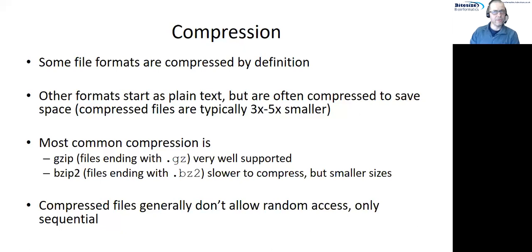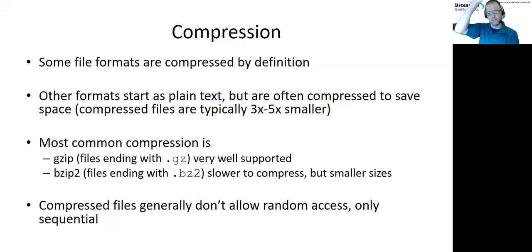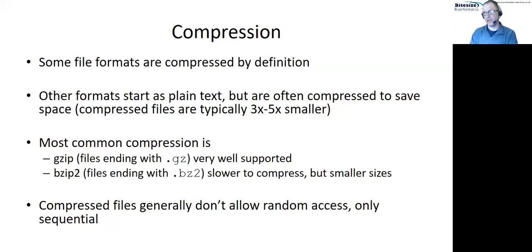There's a trade-off when compressing: your data gets smaller, but general compression schemes don't allow random access into the file. If you compress your data it's much harder to read from a random internal position — you're back to reading from the top. So general compression generally doesn't work with indexing schemes. Formats that want to use both indexing and compression use custom compression schemes that do allow for that. FASTA and raw sequence files are commonly gzip-compressed, while everything else uses something more custom.